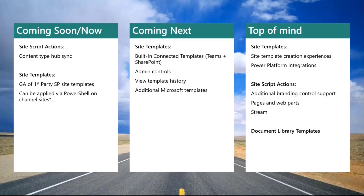Now I'm going to talk about the roadmap. With site scripts, the roadmap items we are working on include adding new components. Coming very soon is the content type hub sync script action, which will allow you to reference and add a content type from your hub. That is a great advancement and should be coming very soon.